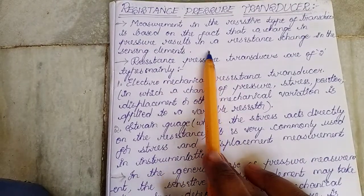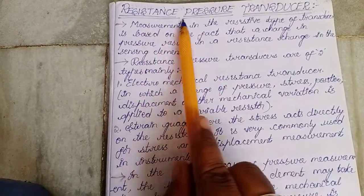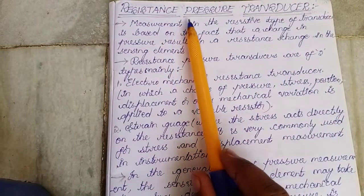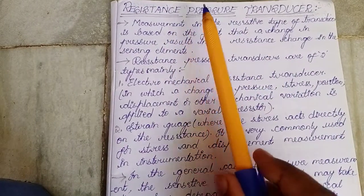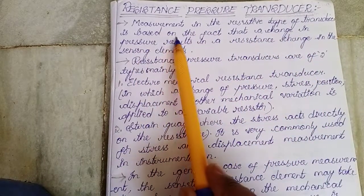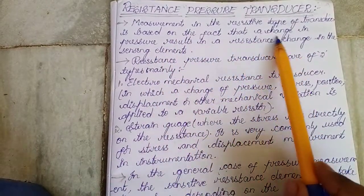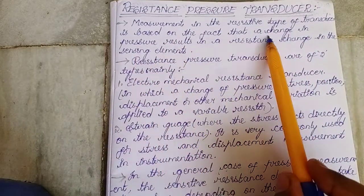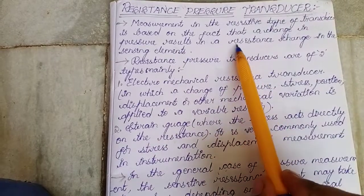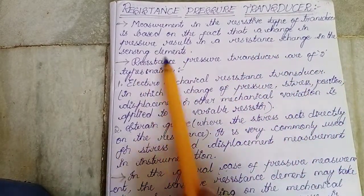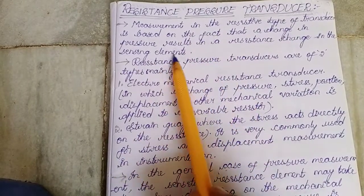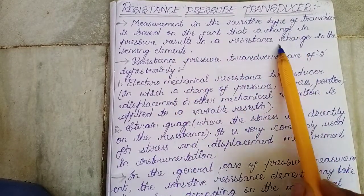Hello everyone. In today's video we are going to learn about resistance pressure transducers. This is a main type of resistive transducers. Measurement in the resistive type of transducer is based on the fact that a change in pressure results in a resistance change in the sensing element. When pressure changes, then the sensing element's resistance also changes.